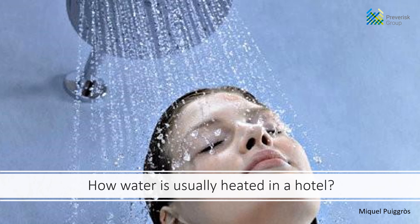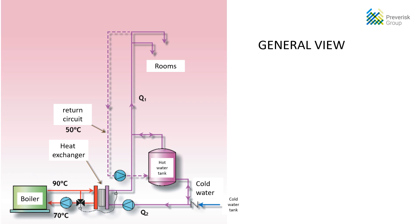I will try to explain for new consultants in a very easy way how the water is heated in a usual, normal hotel. Guests of the hotel need hot water in their rooms, obviously. This water comes from the general water tank of the hotel, and on its way to the rooms, water flows through a heat exchanger where it is heated. From this heat exchanger, water is pumped to the rooms to be used.